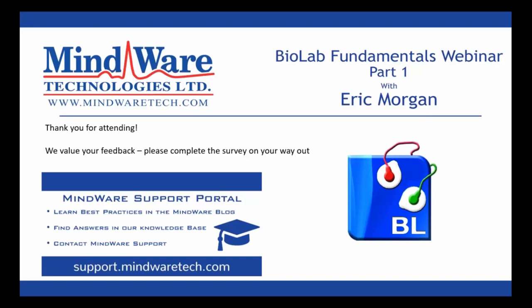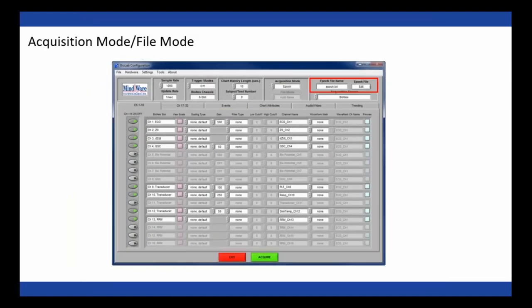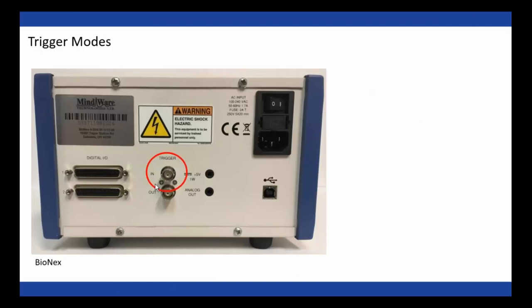Question: Can Biolab trigger other acquisition systems such as EEG or E-Prime? Yes it can. The BionX has a trigger out port. On a newer BionX, anytime an acquisition is started, a 50-millisecond pulse is sent out the trigger out port, which can be sent to any external system waiting to accept a trigger to start acquisition. If you have an older BionX, the trigger out port mirrors whatever's coming into the trigger input line, but you can still route a trigger through it to another system. We recently released a Knowledge Base article describing the trigger out port functionality.